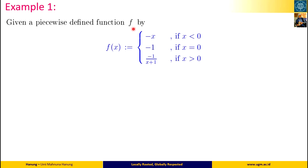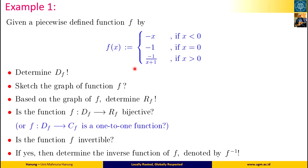Given a piecewise defined function f with three different expressions: f equals minus x for all negative real numbers x; f is minus 1 when x is 0; and f equals minus 1 over x plus 1 for all positive real numbers x. There are several questions related to this function f that we will solve one by one.